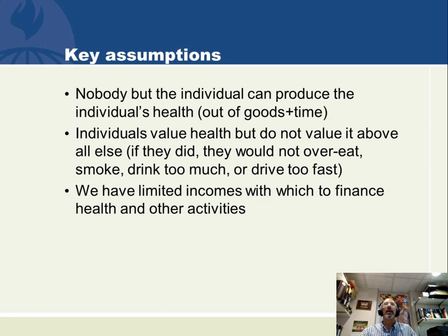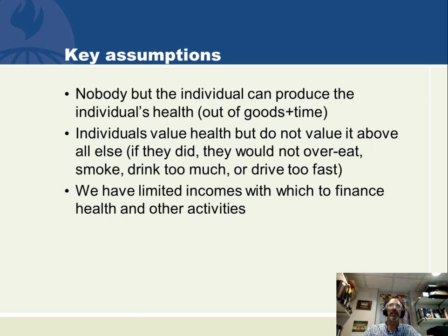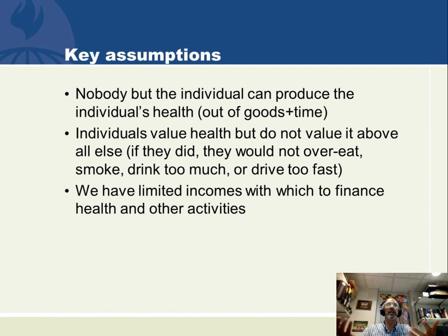Remember from last time, the Grossman model of health assumes that nobody but the individual can produce the individual's health. It is a micro-micro-micro economic model where individuals make their own health by combining their own time with goods that they buy in the marketplace. We know that individuals value health, but they value other things too.